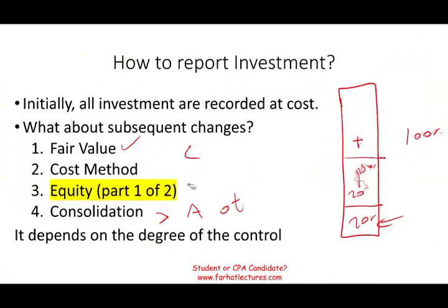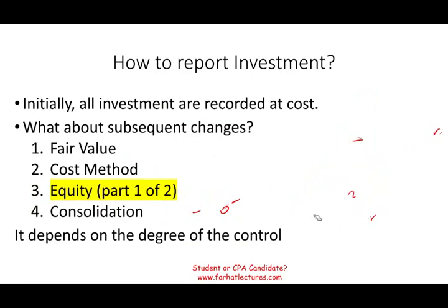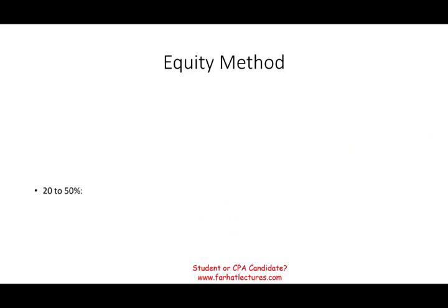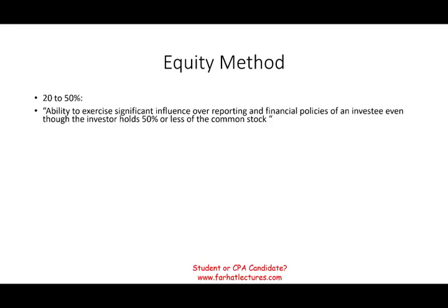We're going to talk about the equity method in depth in part one of two, and in the next session we'll look at part two of two. When we talked about the equity method, we said it's between 20% and 50%. The guideline says you should use the equity method because if you own between 20% and 50%, you have the ability to exercise significant influence over the reporting and financial policies of the investee, even though the investor holds 50% or less of the common stock.